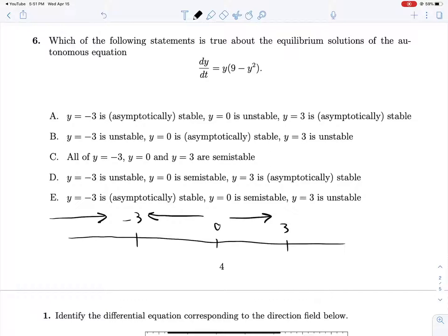And then let's say we have a y value of 4, 4 times 9 minus 16. That will be 4 times negative 7, and that will give us a negative slope back down to 3. So we see that 0, we would call it asymptotically unstable because unless you start exactly at 0, you will always end up moving away from 0 to another asymptote as time goes on. So 0 is unstable.